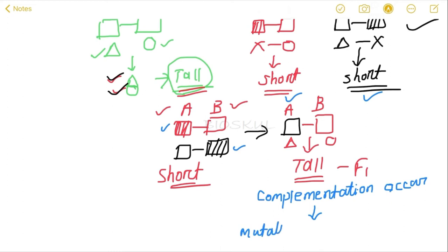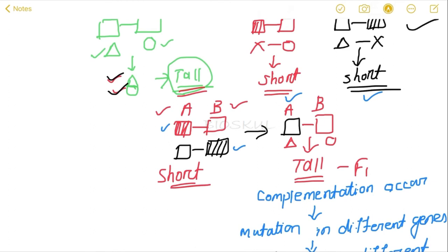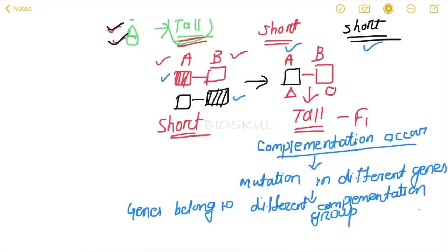If complementation occurs, that means the mutations are present in different genes. Here you can see one mutation is present in gene A and another in gene B. If the mutations are present in two different genes, then complementation occurs and that results in a normal phenotype in the F1 generation. You can also say that the genes belong to different complementation groups.